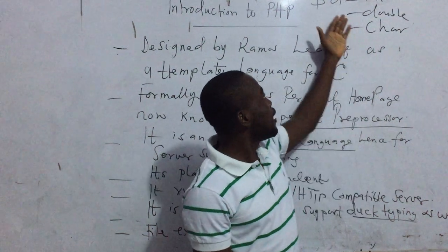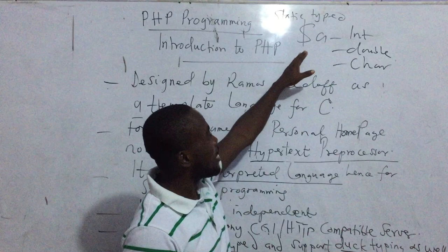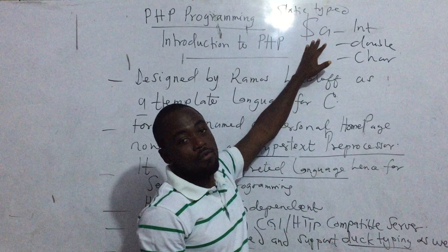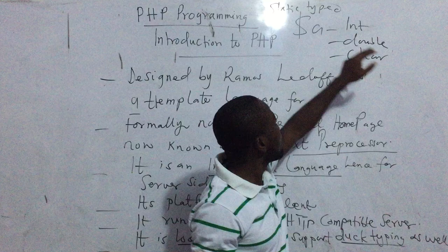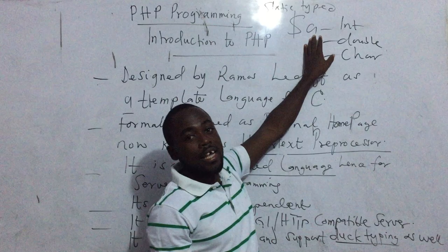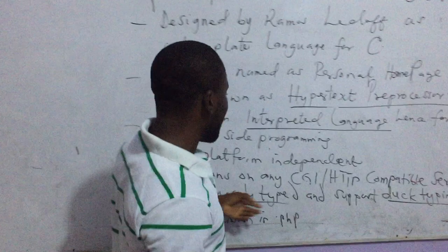PHP supports loosely typed variables — it's a dynamically typed language because we don't have composite data types for variables. So $a can stand for integer, $a can also mean double, $a can also mean string. Unlike Java or C++ where $a can only be one type of data. That's why PHP is called a loosely typed language.